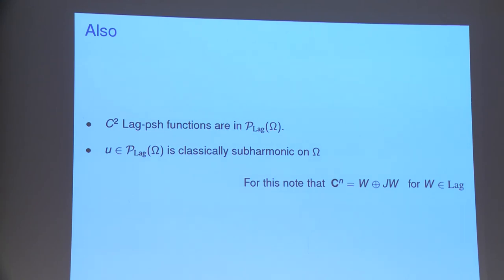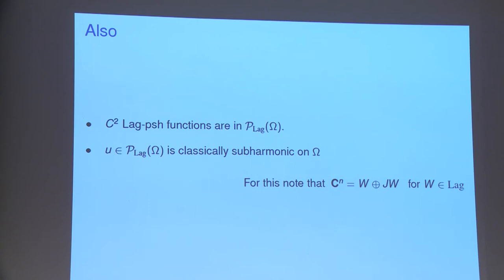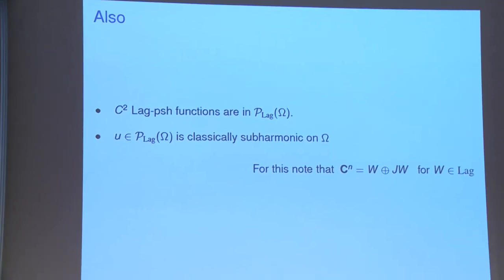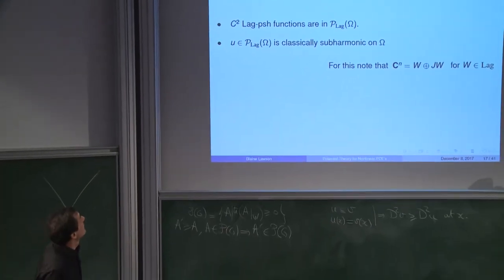What do we know about regularity just from the definition? We observe that Lagrangian subharmonic functions are at least subharmonic in the classical sense. Since any Lagrangian W is orthogonal to its image JW, which is again a Lagrangian, the trace on W plus the trace on JW gives the global trace — the sum of two non-negative traces — so the global Laplacian is non-negative. That is the starting regularity we have, but not more without further effort.